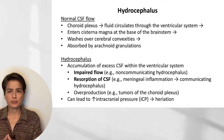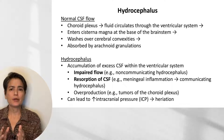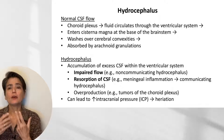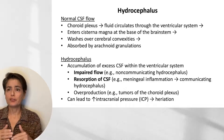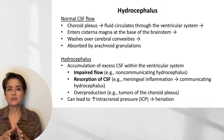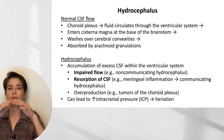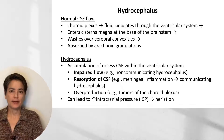Now let's turn to hydrocephalus, which can also cause increased intracranial pressure. Before we do that, let's briefly review the normal flow of cerebrospinal fluid. Your choroid plexus generates this fluid, which circulates through the ventricular system and then enters the cisterna magna at the base of the brainstem, washing over our cerebral convexities, then being absorbed by our arachnoid granulations. That is what happens in health.